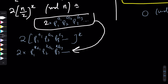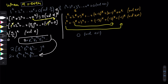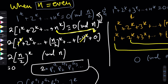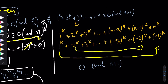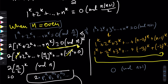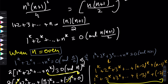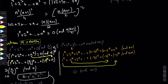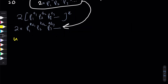So we've proven that the sum ≡ 0 (mod n/2) and ≡ 0 (mod n+1). Since n/2 and n+1 are co-prime, this implies 1^k + 2^k + ... + n^k ≡ 0 (mod n(n+1)/2), and since n(n+1)/2 = 1 + 2 + ... + n, we have proven the statement for n even.